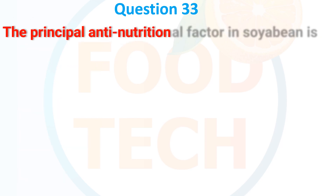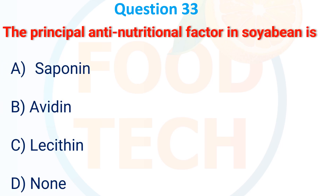Question 33. The principal anti-nutrition factor in soybean is: A. Saponin. B. Avidin. C. Lecithin. D. None. The correct answer is A: saponin.